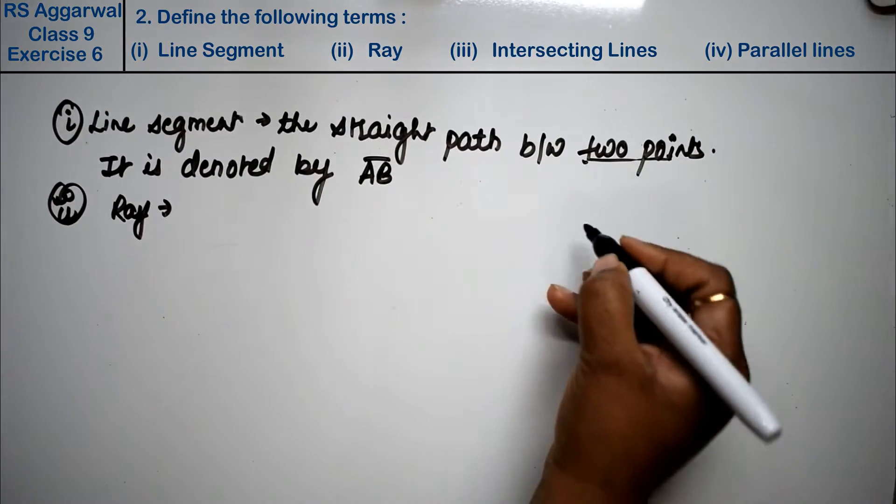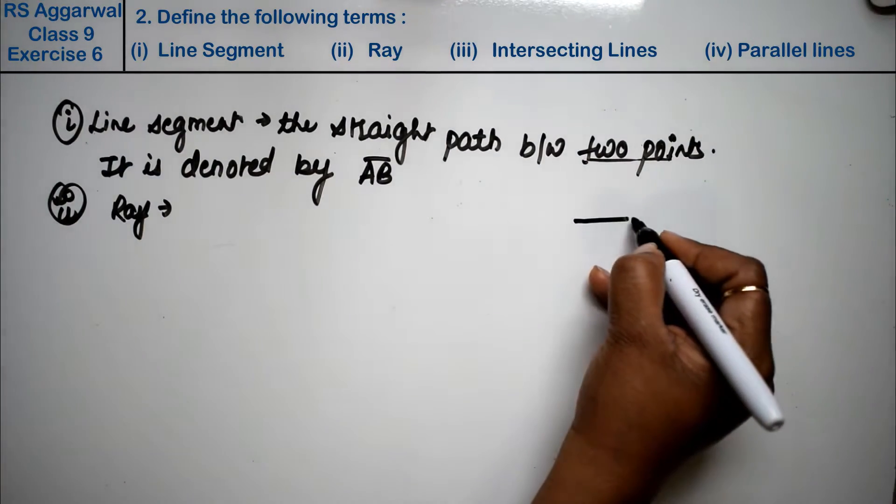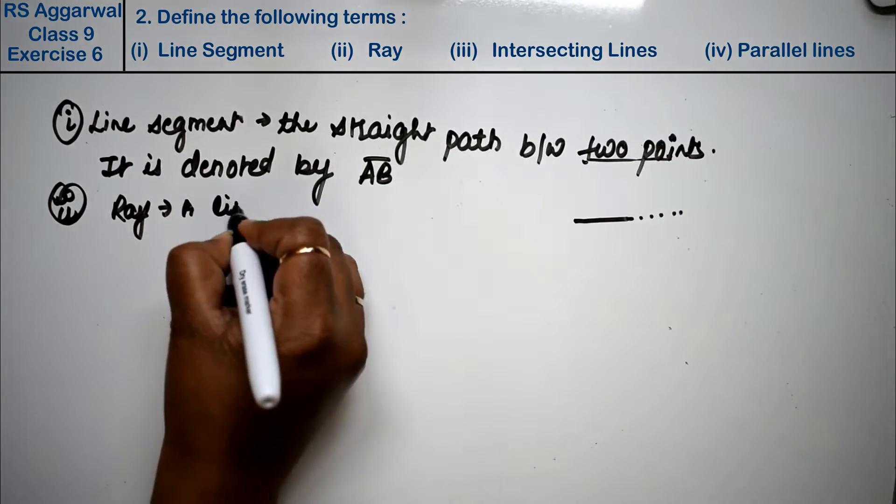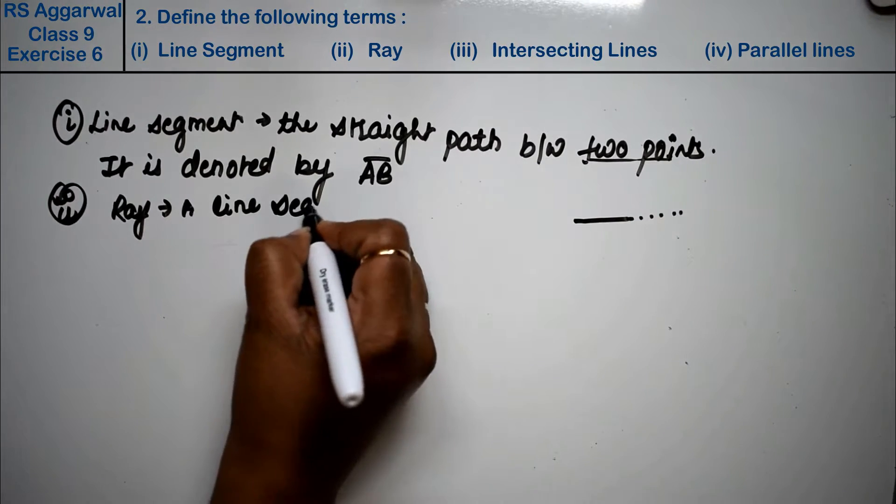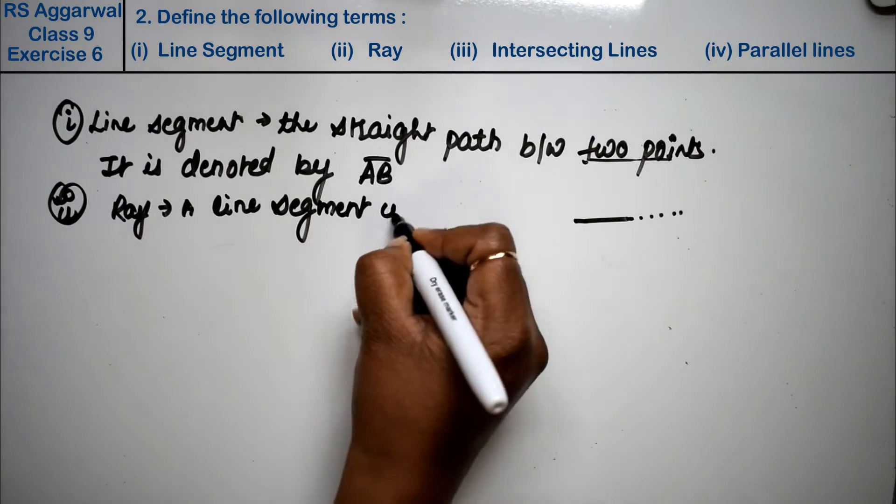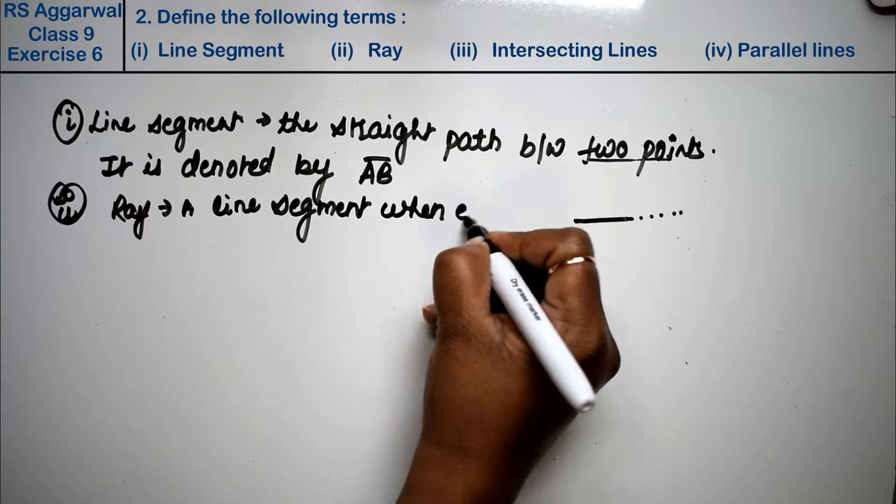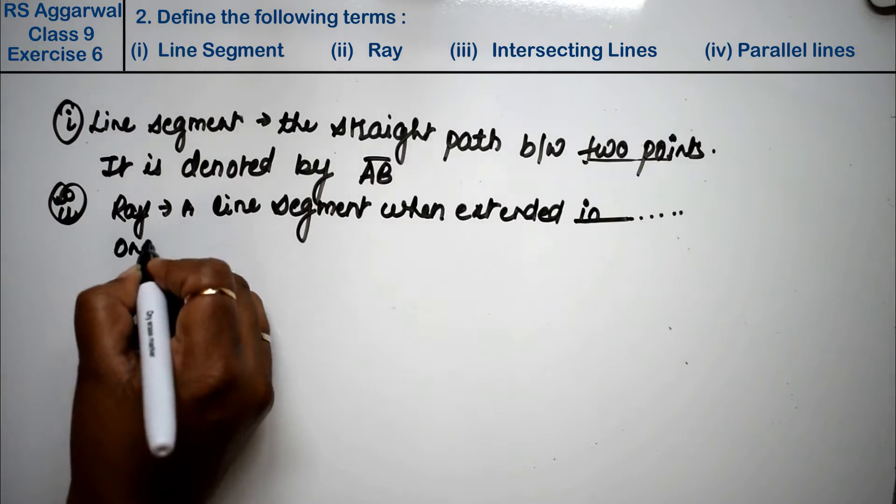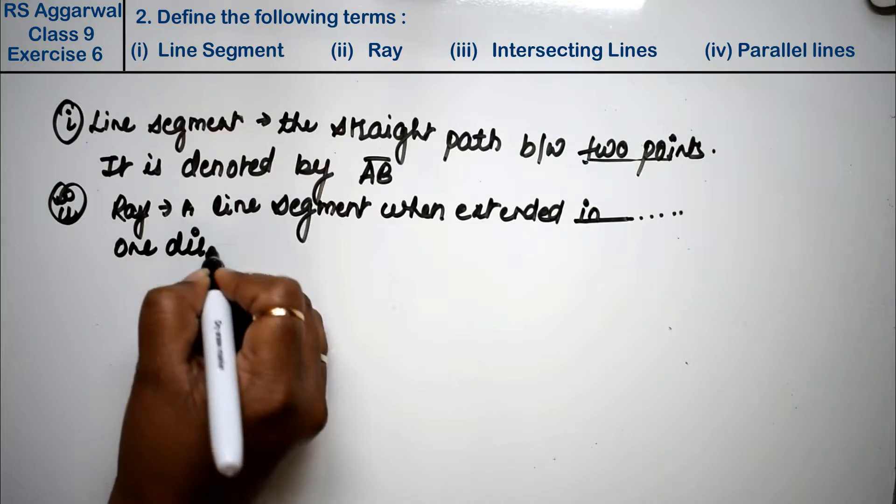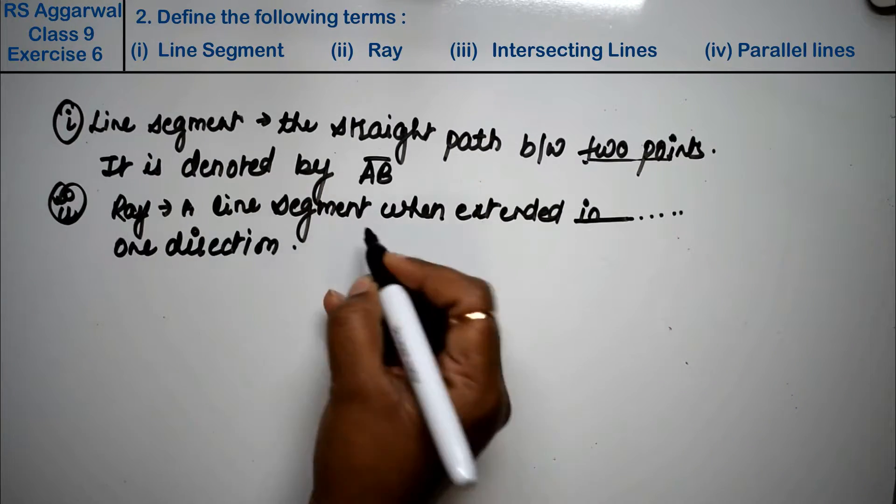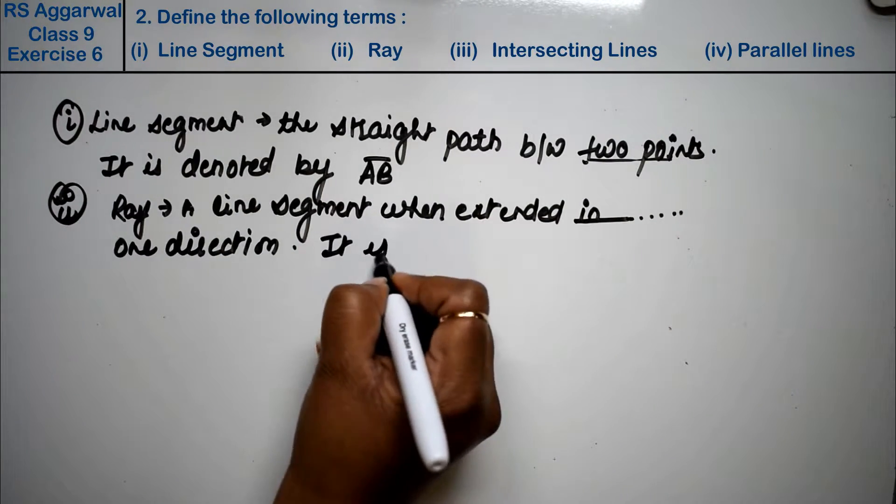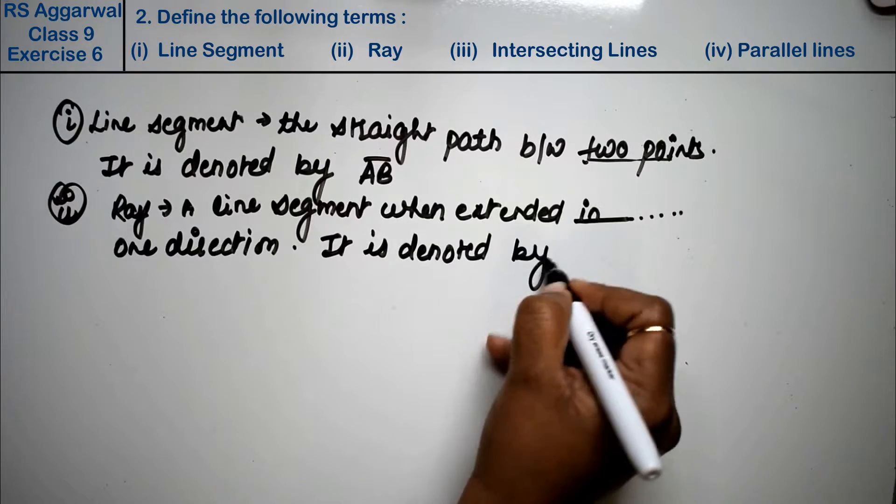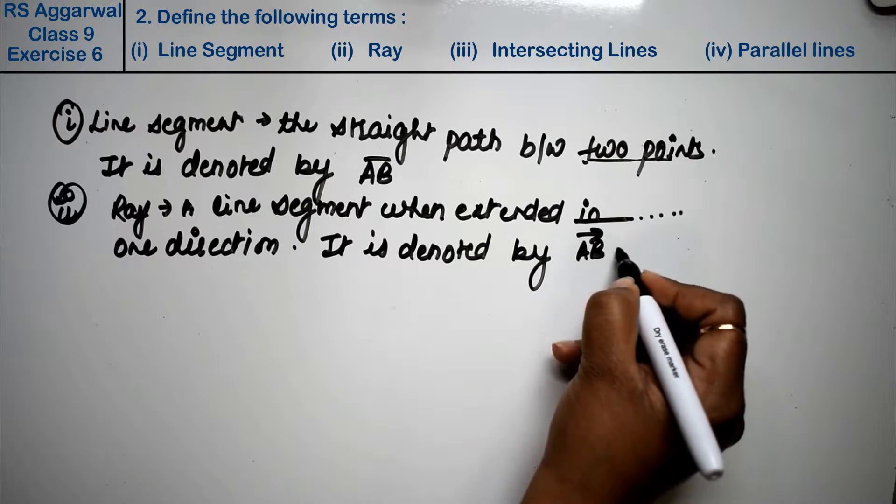A line segment ray hoti thi? Ek line segment hai usko ek hi direction mein extend karna. A line segment when extended in one direction is called a ray. It is denoted by, iske baad arrow, right friends?